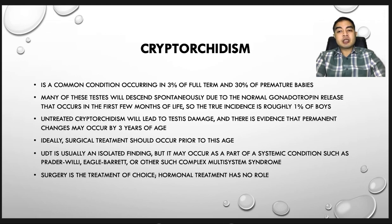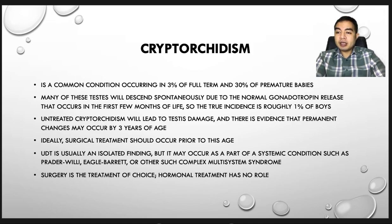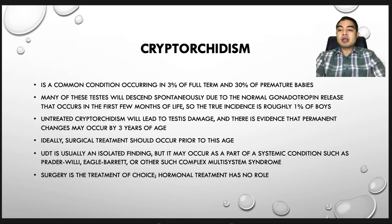Untreated cryptorchidism will lead to testicular damage, and there is evidence that permanent changes may occur by 3 years of age. Ideally, surgical treatment should occur prior to this age. The undescended testis is usually an isolated finding, but if it occurs as part of a systemic condition such as Prader-Willi, Eagle-Barrett, or other complex multi-system syndromes, surgery is the treatment of choice and hormonal treatment has no role.